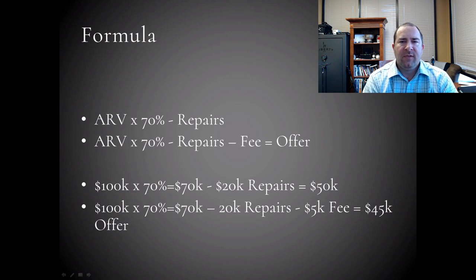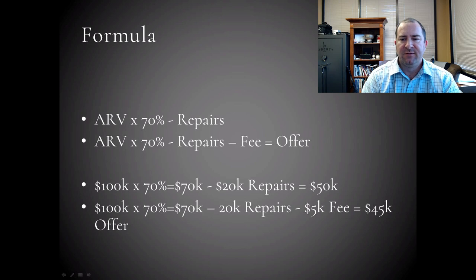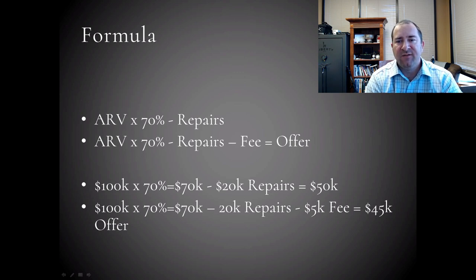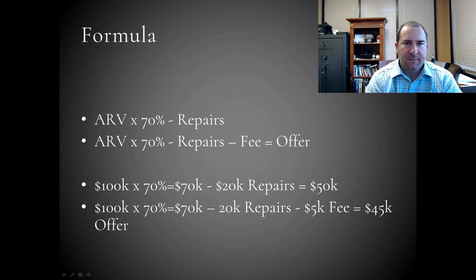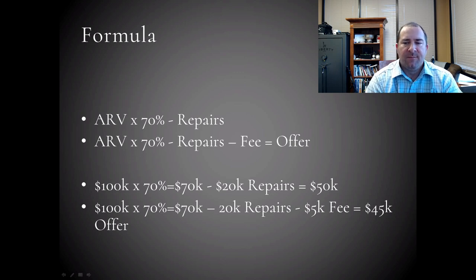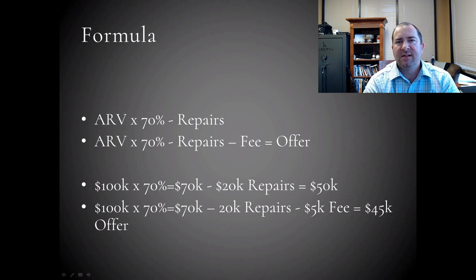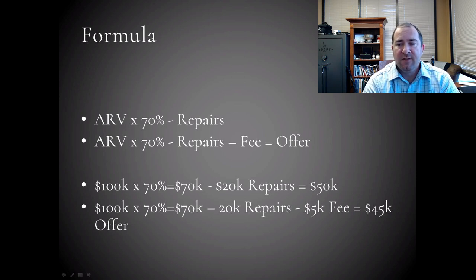The basic formula — and I've kind of written it out two ways — is: once you determine the after repair value (ARV) or market value of the property, you figure out 70% of that. You take ARV times 70%, and from that number you minus out the repairs, whether it's a $5,000 renovation or $20,000 or somewhere in between. If you want to take it to another level, you also subtract out the wholesaler's fee from that same formula.